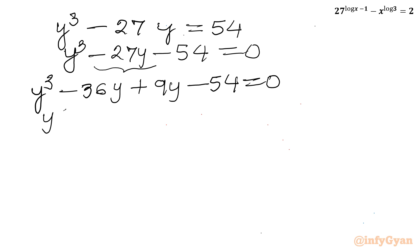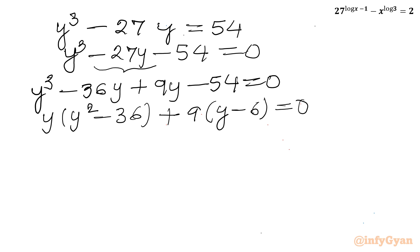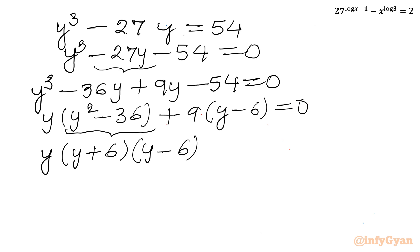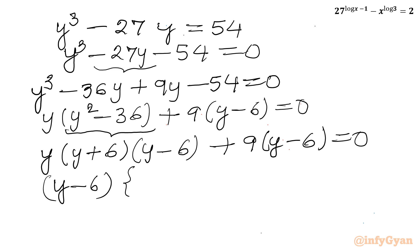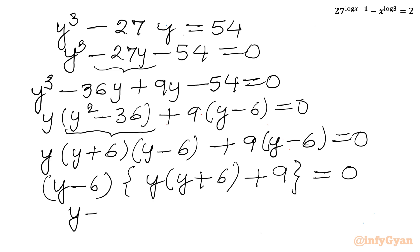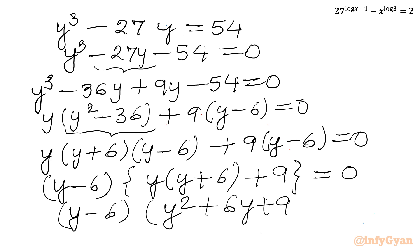From the first two terms, y is common, giving y^2 minus 36. From the last two terms, 9 is common, giving y minus 6. Now y^2 minus 36 is y^2 minus 6^2, so we apply the difference of two squares identity and write (y plus 6)(y minus 6) plus 9(y minus 6) equals 0.